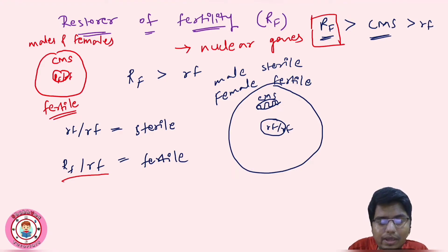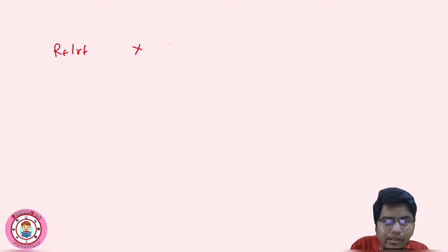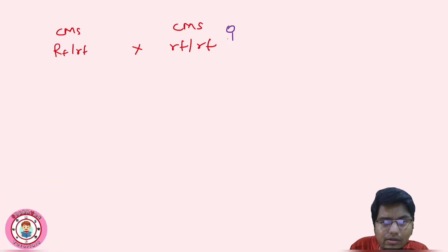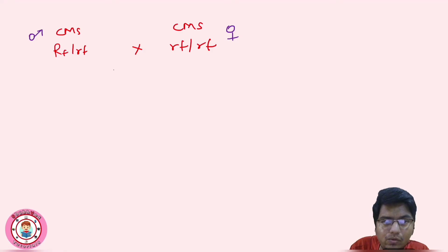Now let's look at a cross. We have a CMS plant acting as the female crossed with a male. The CMS female has the condition with CMS in the mitochondria and small rf small rf in the nucleus.